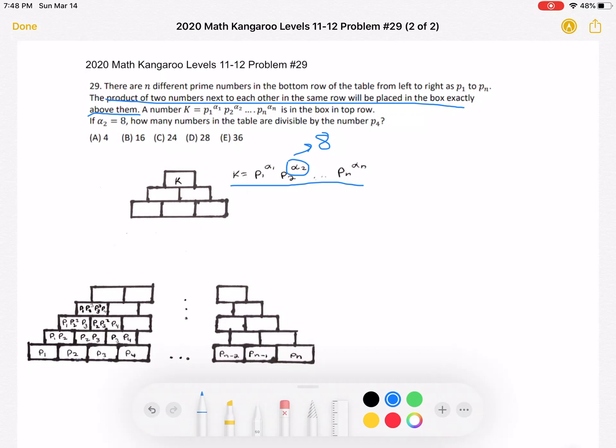So again, we want to find some sort of relationship between the row number and the exponent of P2. Let's ignore the bottom row for now. Those are the numbers that are given to us in the problem. Let's start with the second row. When we notice the highest power of P2, we have two P2s. They're each to the first power. So the highest power is 1.